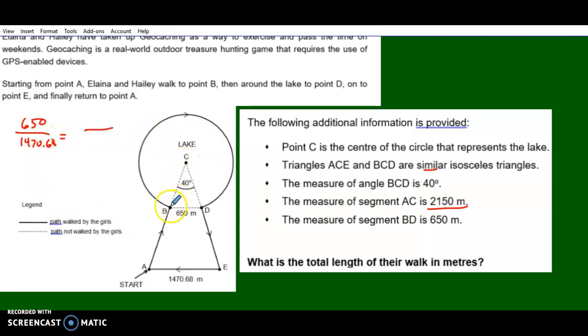This is the small triangle here. I don't know what that is, but that's the radius. That's what I'm looking for. I need that to find the arc length because I need the circumference. So this is the small, and the big one, AC, is given, 2150. So now I can find the radius.